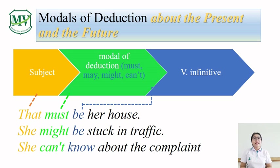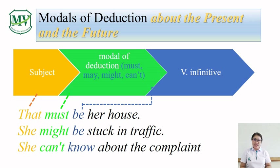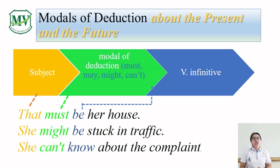Let's begin with how we use modals of deduction about the present and future. When you want to guess something about the present and future, to form a sentence you need a subject followed by a modal — choose one: must, may, might, or can't — based on your certainty, and followed by the verb infinitive. For example: 'That must be her house because I always see her in front of that house.' 'She might be stuck in traffic — that's why she is late.' Or: 'She can't know about the complaint because she looks happy.'